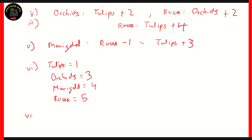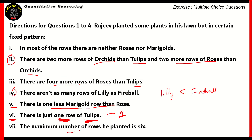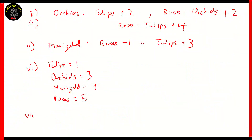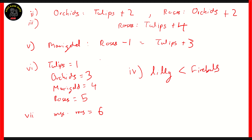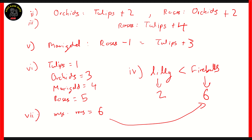Clue number seven says the maximum number of rows he planted for any one flower is six, so maximum rose is equal to six. According to clue number four, the number of lilies are always less than the number of fireballs. Since we have one row of tulips, three rows of orchids, four rows of marigolds, and five rows of roses, we can easily conclude that the number of rows planted for lilies are two and the number of fireballs planted are six, because that's the maximum number possible. So we now know the number of rows planted for each flower.